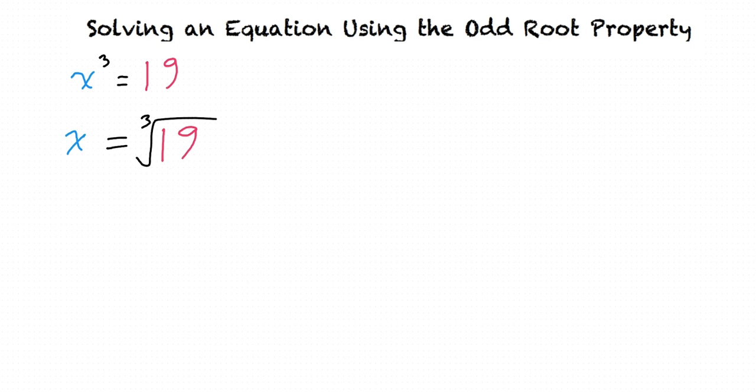But let's take a look at a quick example where we would simplify the answer. What if we had x cubed equals 16? We would solve for x to find x equals the cube root of 16. The factors of 16 are 1, 2, 4, 8, and 16.